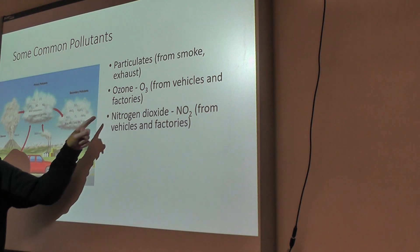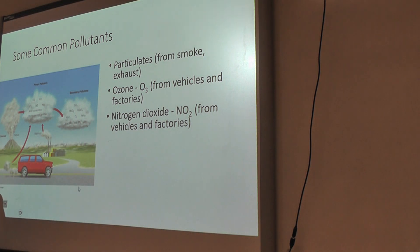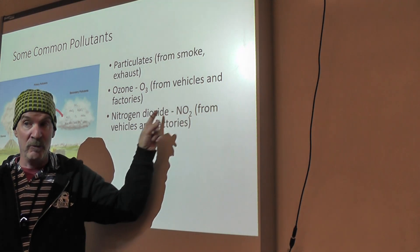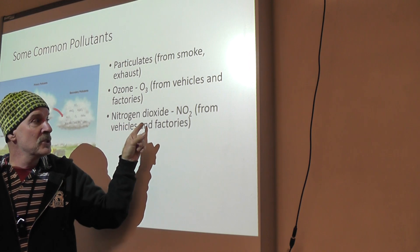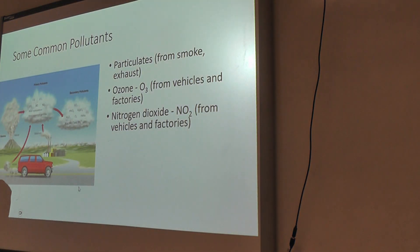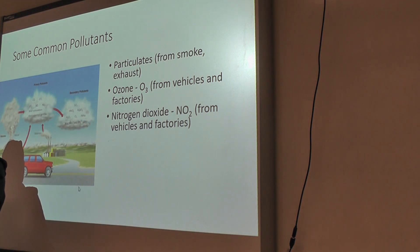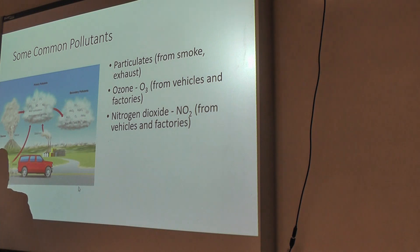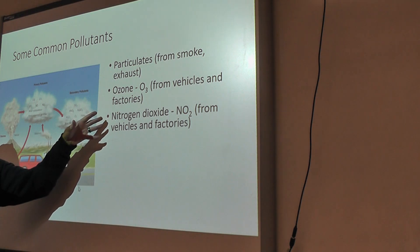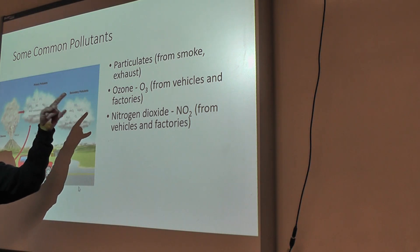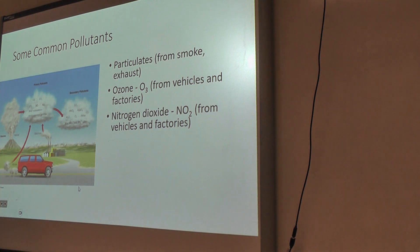We also get nitrogen dioxide, which comes from vehicles and factories. Nitrogen dioxide is interesting because it isn't particularly harmful directly — what it generally does is provide essentially a fertilizer boost to certain things. The problem with nitrogen dioxide isn't that it's bad for some things; it's that it's too good for certain things, causing other things to grow at a rate that throws off the ecological balance. We'll see some examples of things like this when we start talking about food webs and food chains.